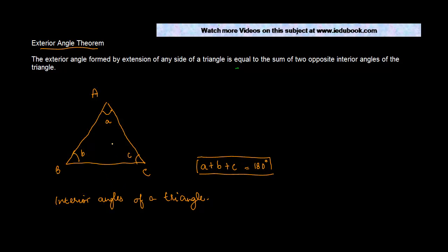And we know that A plus B plus C is equal to 180 degrees. The exterior angle is formed by extension of any side of a triangle. So let's say you extend any side — let's say we extend this side here. Then the angle which is formed outside of this particular line, which is this angle, let's call this as E. This is known as the exterior angle.